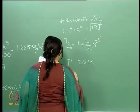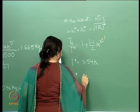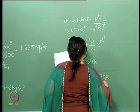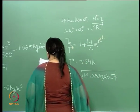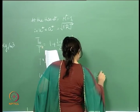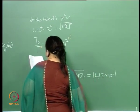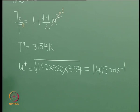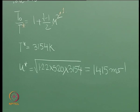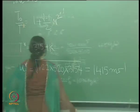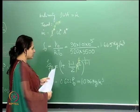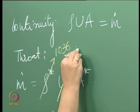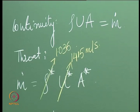T-star comes out to be 3154 Kelvin. So the temperature at the throat is 3154 Kelvin; remember the combustion chamber is 3500 Kelvin, so this is around 3160. Having got that, we can now compute U-star = sqrt(gamma R T*), which comes out to be 1415 meters per second.